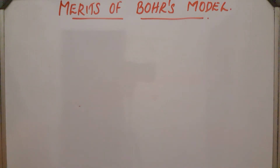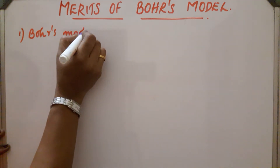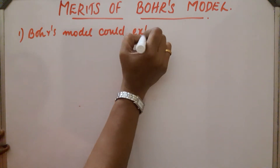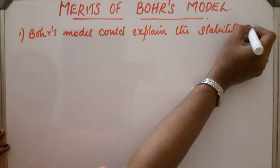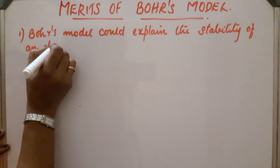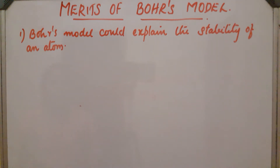Merits of Bohr's model of atoms. First point: Bohr's model could explain the stability of an atom. The electron revolving around the nucleus in a particular orbit cannot lose energy — the energy of these orbits are fixed. Therefore, loss of energy by the electron and falling into the nucleus does not arise, as in the case of Rutherford's model. So, he could easily explain the stability of an atom.